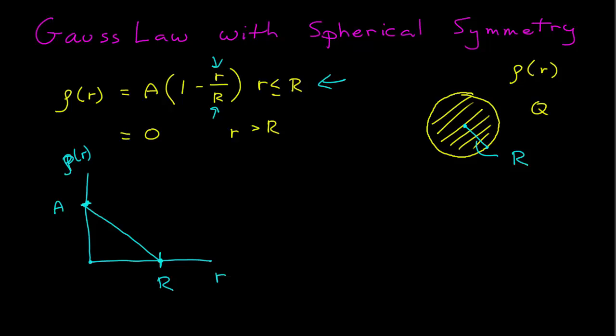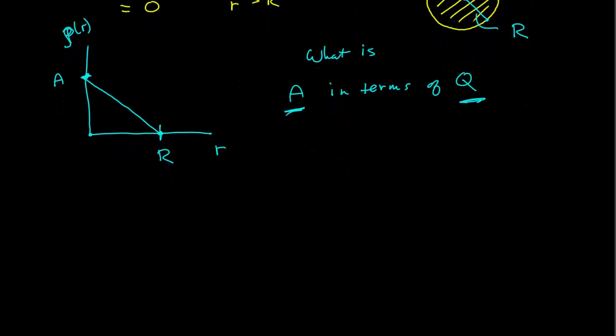So what's the first thing we might want to know about this system? The first thing one might ask is what is A in terms of Q? Q has physical meaning to us. That's the total charge of the system. A is just some random constant. Can we find this constant in terms of the total charge? We can do that because we know that the integral over all space of the density distribution dV is equal to the total charge.